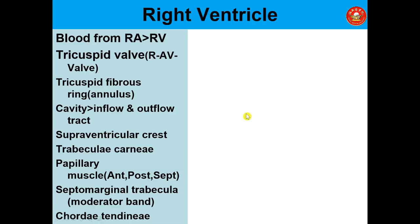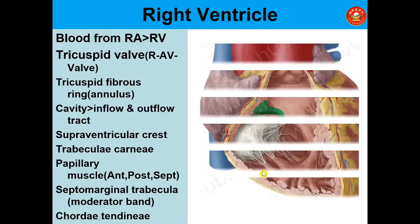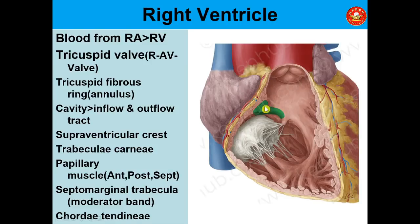Moving from the right atrium to the right ventricle through the tricuspid valve: the tricuspid valve is present between the atrium and ventricle, also known as the right atrioventricular valve, surrounded by a fibrous ring also known as the annulus. The right ventricle cavity can be divided into two parts — the inflow tract and the outflow tract — with the supraventricular crest as the boundary between them.